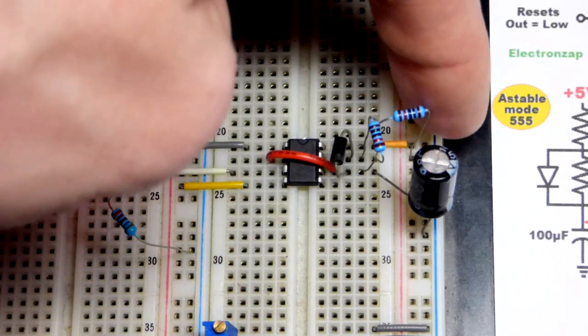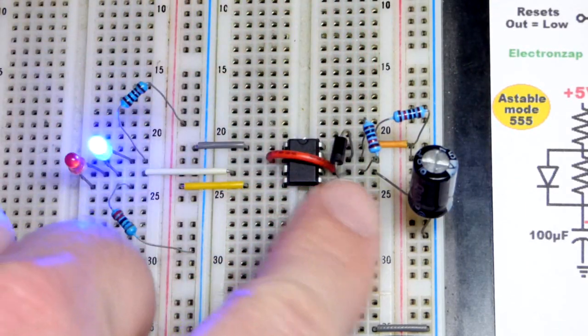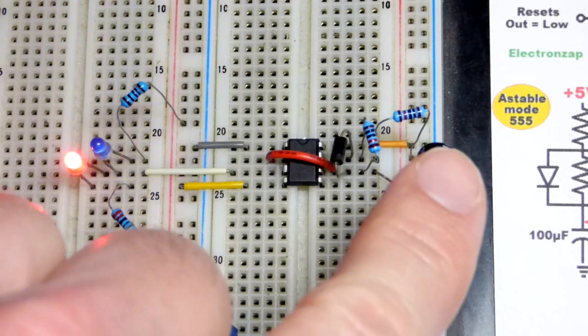So when the output's high, red LED is lit up, the capacitor is charging through the 10k resistor and the diode right there, 100 microfarad capacitor.